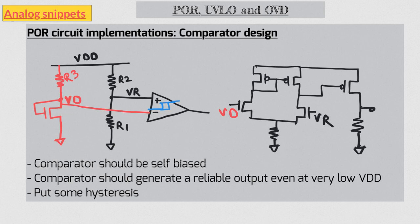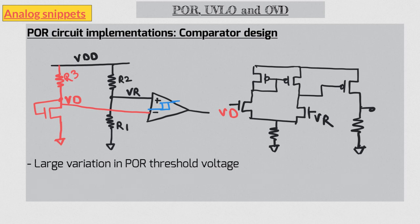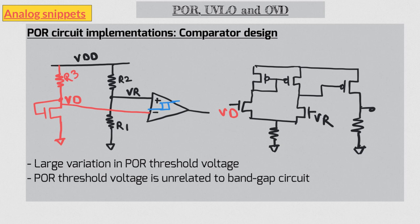The first concern is, as discussed before, the variation is rather large. This large variation is still acceptable if your supply voltage is high. For example, if your nominal supply voltage is higher than 2.5 volts, this scheme is still fine. But for lower supply voltages, for example 1.8 volts, variation can be unacceptable. The second problem is that threshold voltage is unrelated to band gap. Minimum supply voltage of band gap can have large variations itself, so it would have been nice if somehow POR can track this variation. To address both these issues, we can use band gap itself to generate the POR voltage, and this is what we will discuss next.